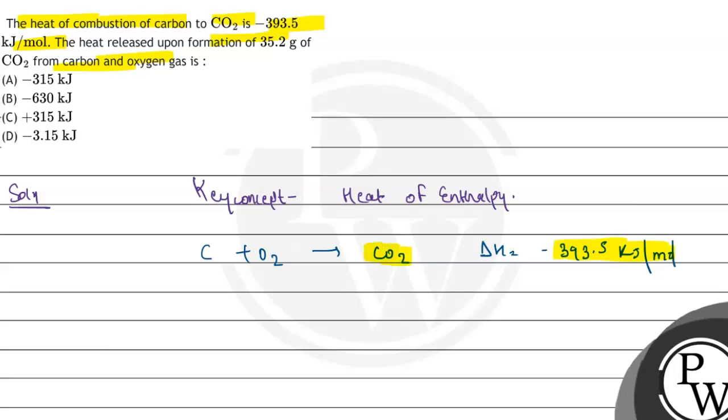So let's find out how many moles is present in 35.2 grams of CO2. Therefore, number of moles is equal to 35.2 upon the molar mass of CO2, which is 44. This is equal to 0.8 mole.